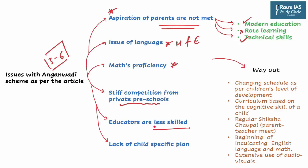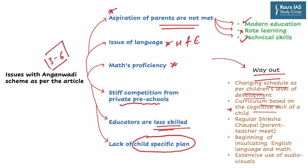Additional issues include educators being less skilled due to lack of modern skills, and absence of child-specific plans. The article suggests the following way forward: changing schedules as per children's level of development; curriculum based on the cognitive skills of the child; regular Shiksha Chaupal — that is, parent-teacher meets; beginning to inculcate English language and maths skills in Anganwadi workers through skill upgradation; and extensive use of audio-visual tools, meaning the use of modern tools in education.